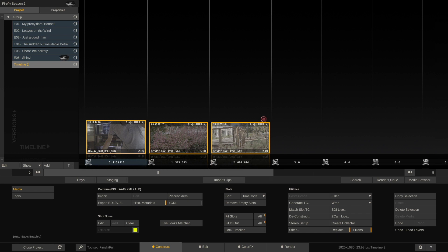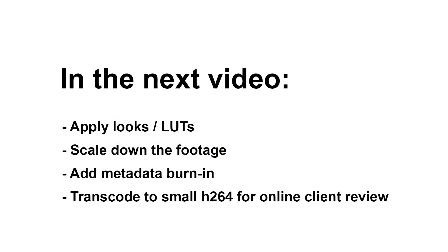That's it for this video. In the next video we'll look at a slightly different scenario: creating small H.264 preview files for clients to upload. We'll load the ProRes RAW files into Scratch, apply looks or LUTs, apply scaling to render HD-sized H.264 instead of full source resolution, and apply a burn-in node to embed metadata into the image before rendering small H.264 files for clients to review online.